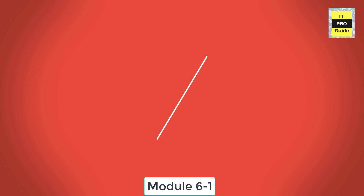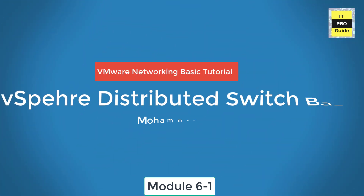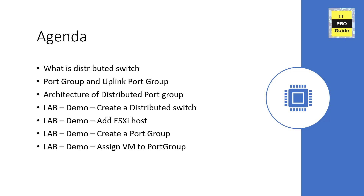Welcome everyone to this VMware basic networking tutorial. In this session we're going to learn about vSphere Distributed Switch. We'll cover what is distributed switch in VMware, port groups and uplink port groups, the architecture of distributed port groups, and then a demo on how to create a distributed switch, add ESXi hosts, create different port groups, and assign virtual machines to port groups.